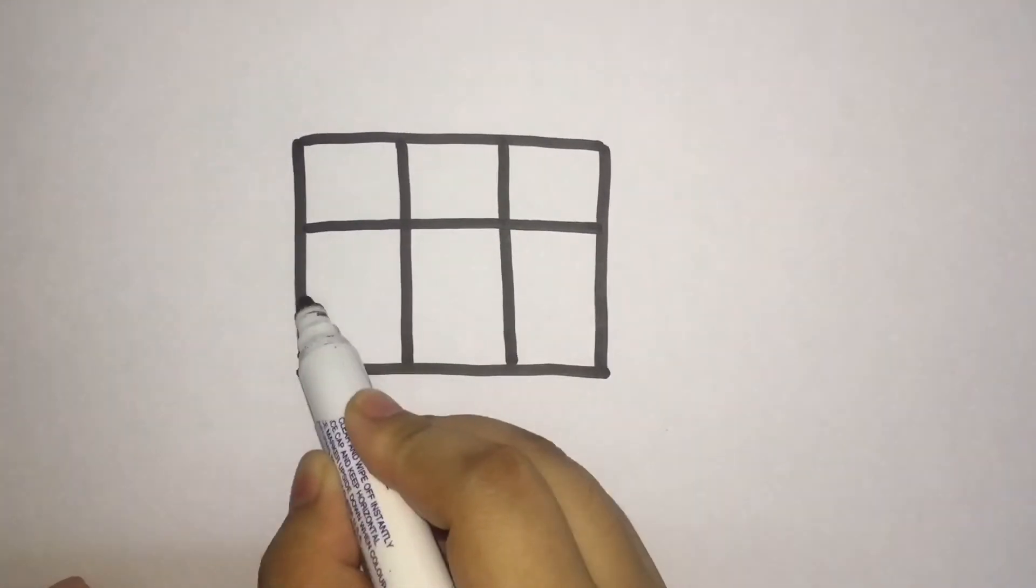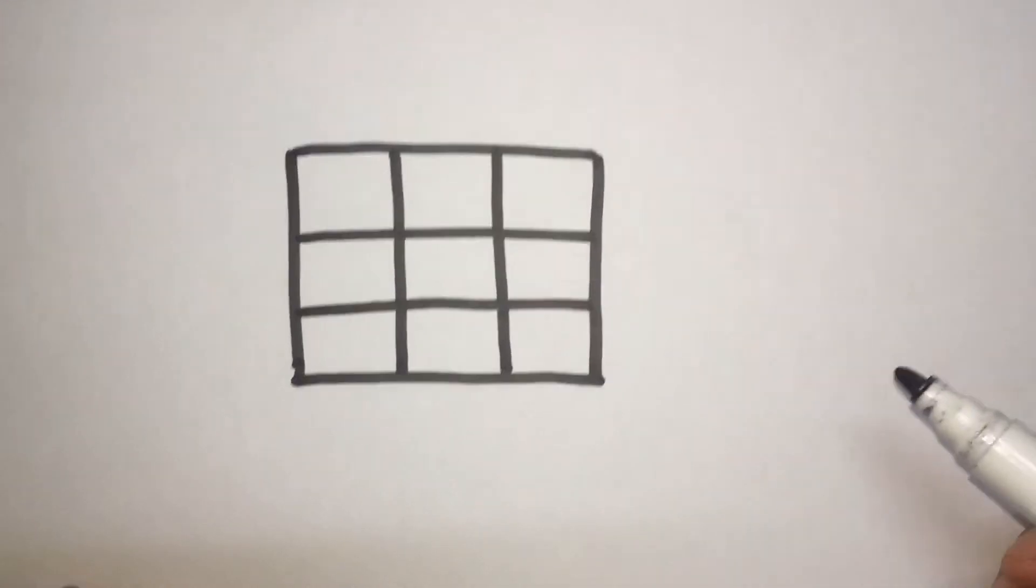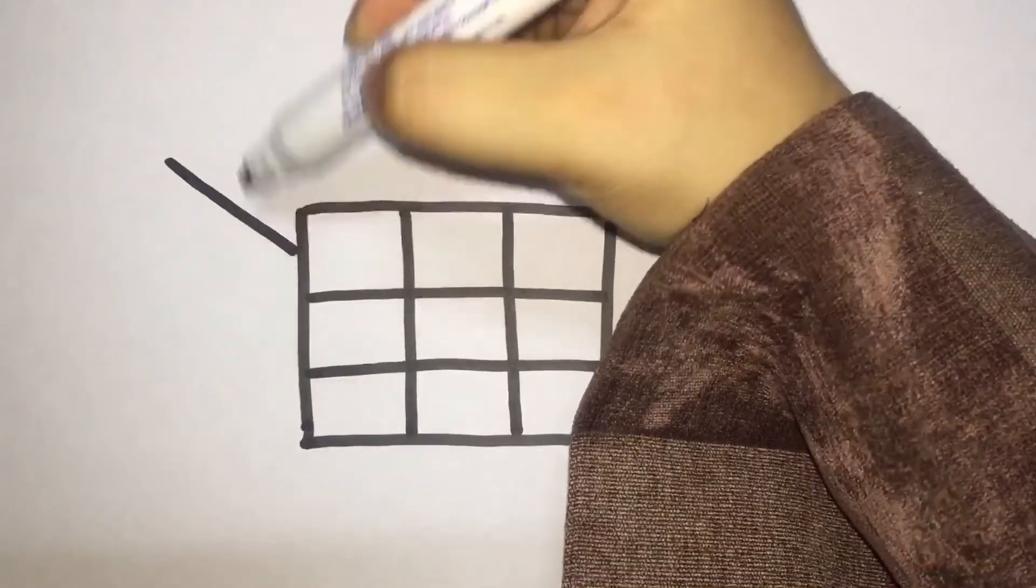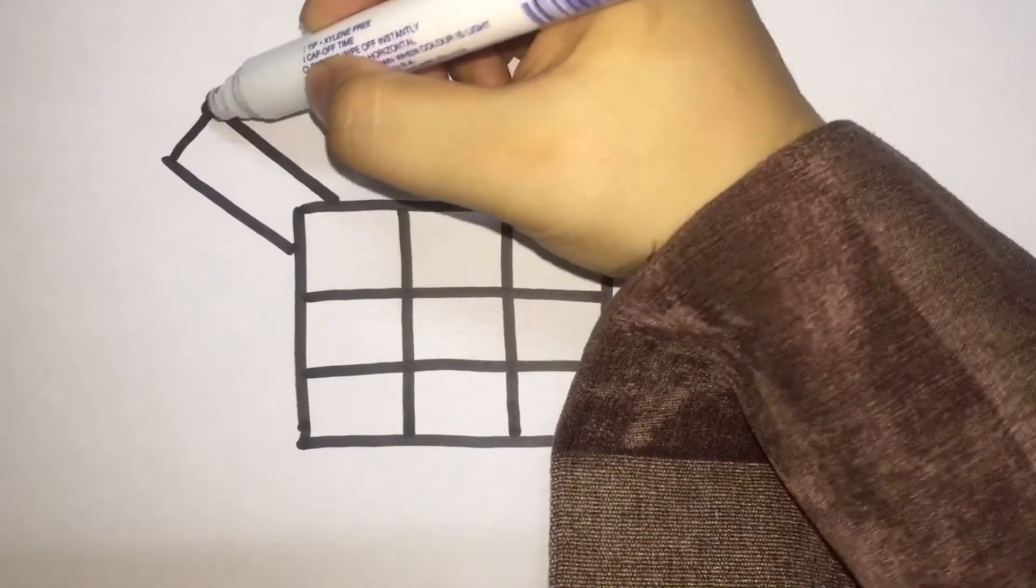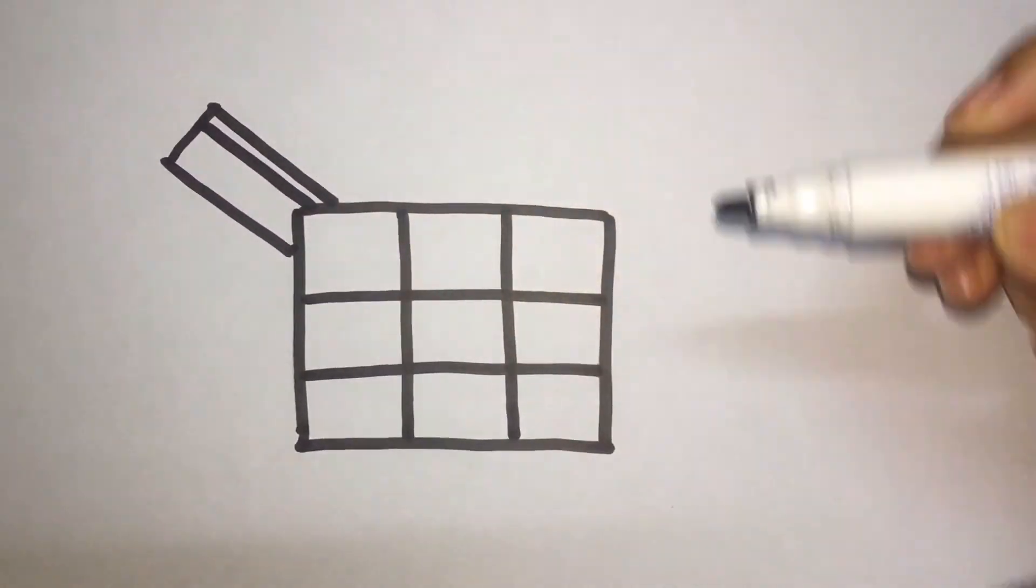Now we draw two horizontal lines inside the square. Then we make two lines, a simple line.